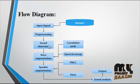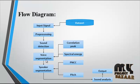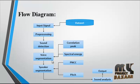The next module is sound detection — detecting whether sound is present in an audio file or another file. After sound detection, voice segmentation is performed. In this voice segmentation step, two major features are considered: correlation peak and spectral energy. Using these two features, we segment the signal to determine whether it is voice or not.